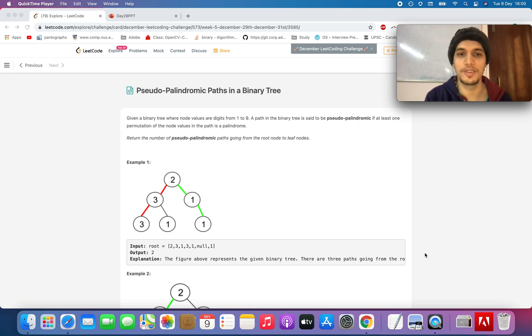In this question you are given a binary tree and the digits and values in the tree hold from 1 to 9. This is a very important point to remember that the values range from 1 to 9, and you need to count the number of possible pseudo-palindromic paths that can be generated that are present in the tree.